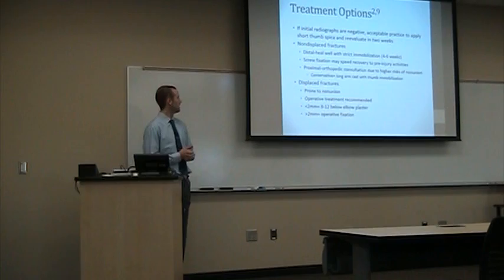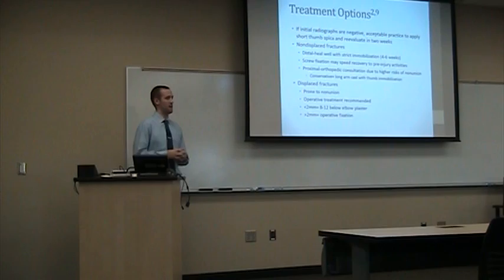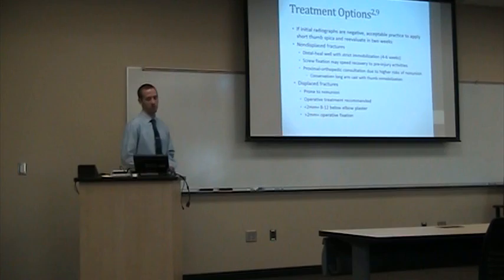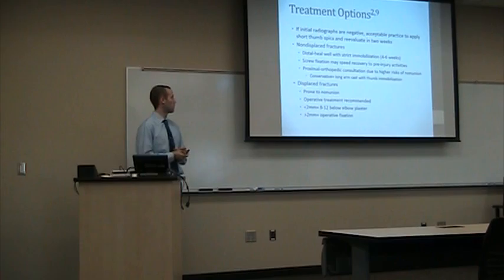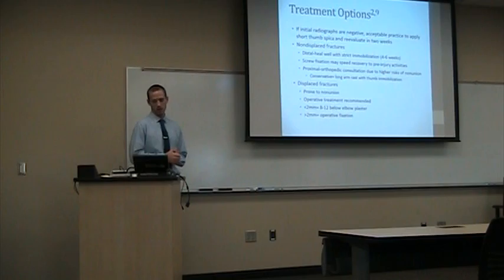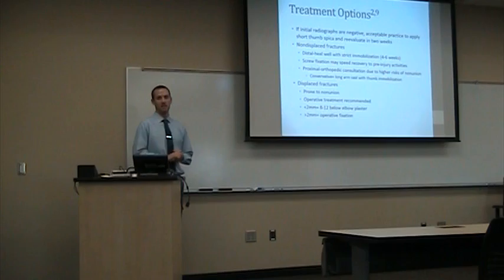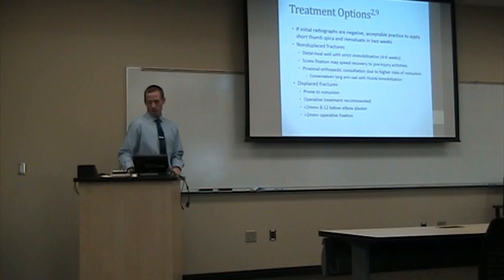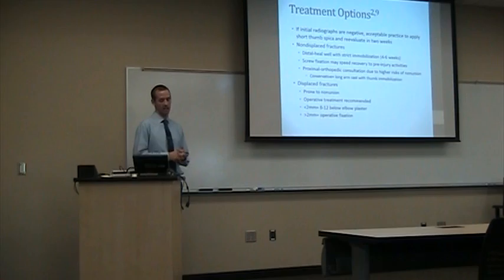So treatment options. If initial X-rays are negative, it's acceptable to apply a short thumb spica, wait two weeks, reevaluate, and repeat X-rays. When discussing treatment, fractures are separated into non-displaced and displaced. Non-displaced fractures — distal pole and waist — usually heal well with strict immobilization, typically eight to twelve weeks due to the high risk of non-union with the scaphoid. Screw fixation can be used for athletes or high-risk cases to speed up the process. If it's a proximal fracture, an orthopedic consultation is warranted because of the avascular necrosis risk.